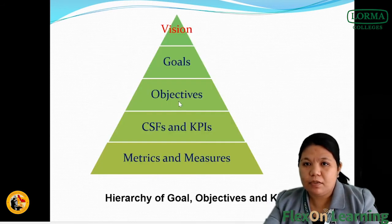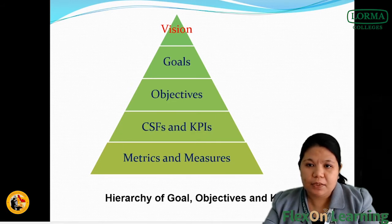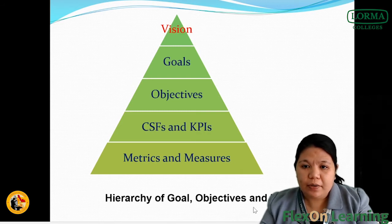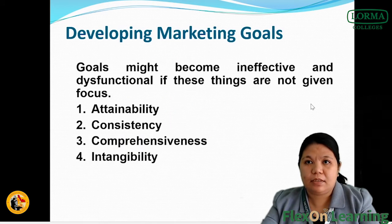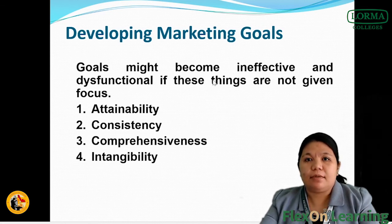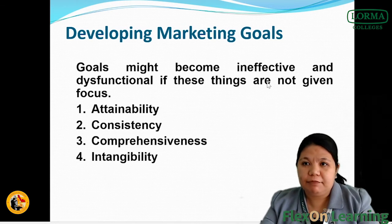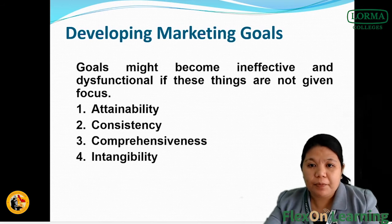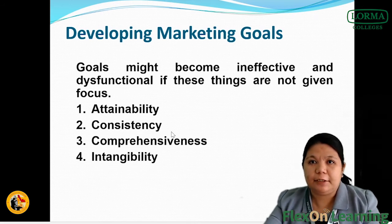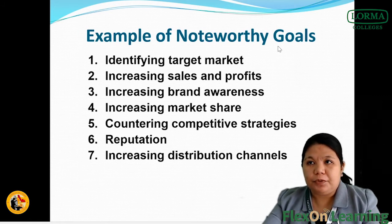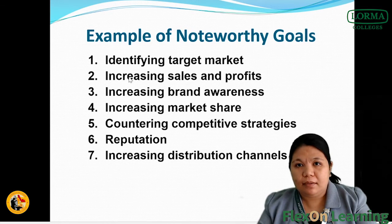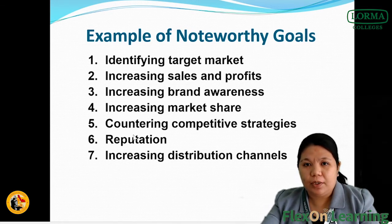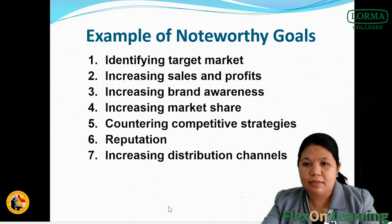We have the hierarchy of vision, goals, objectives, CSFs, and KPIs metrics and measures. Goals might become ineffective and dysfunctional if the following are not given focus: attainability — make sure the goal is attainable — consistency, comprehensiveness, and being time-bound. Examples of marketing goals include identifying target markets, increasing sales and profits, increasing brand awareness, increasing market share, countering competitive strategies, building reputation, and increasing distribution channels.